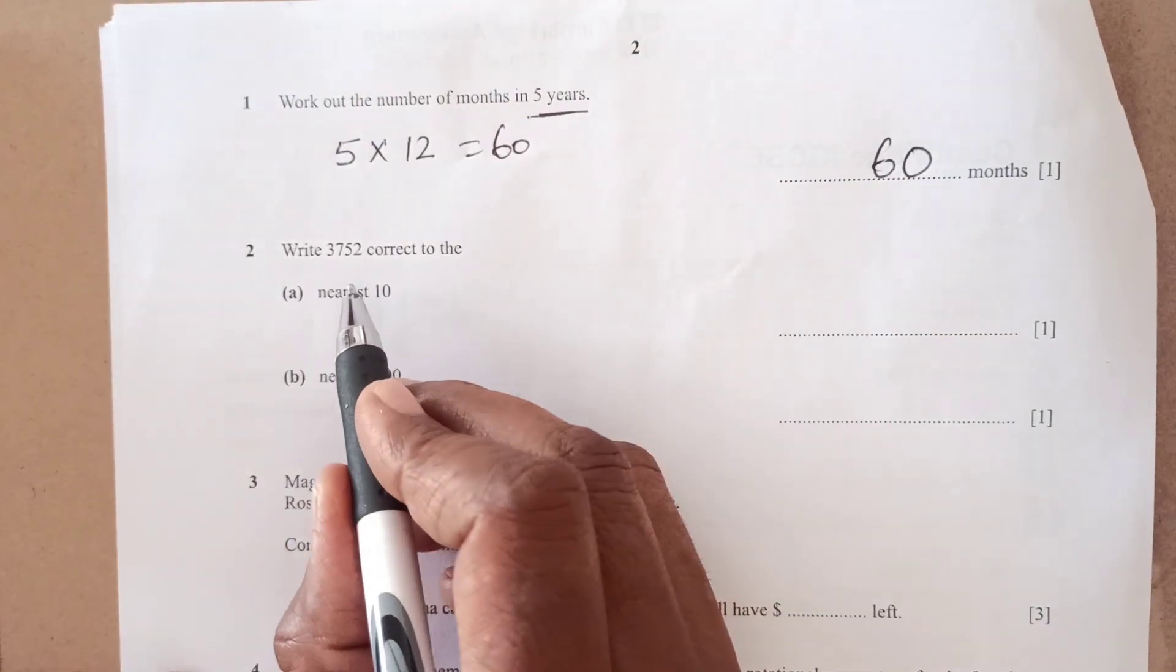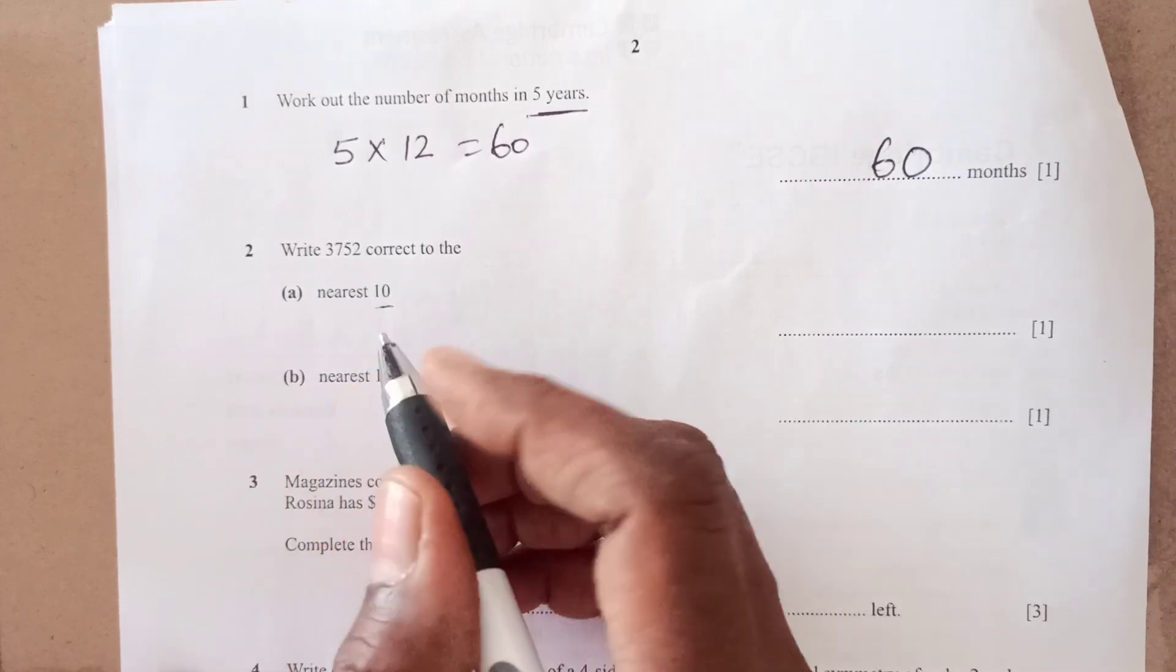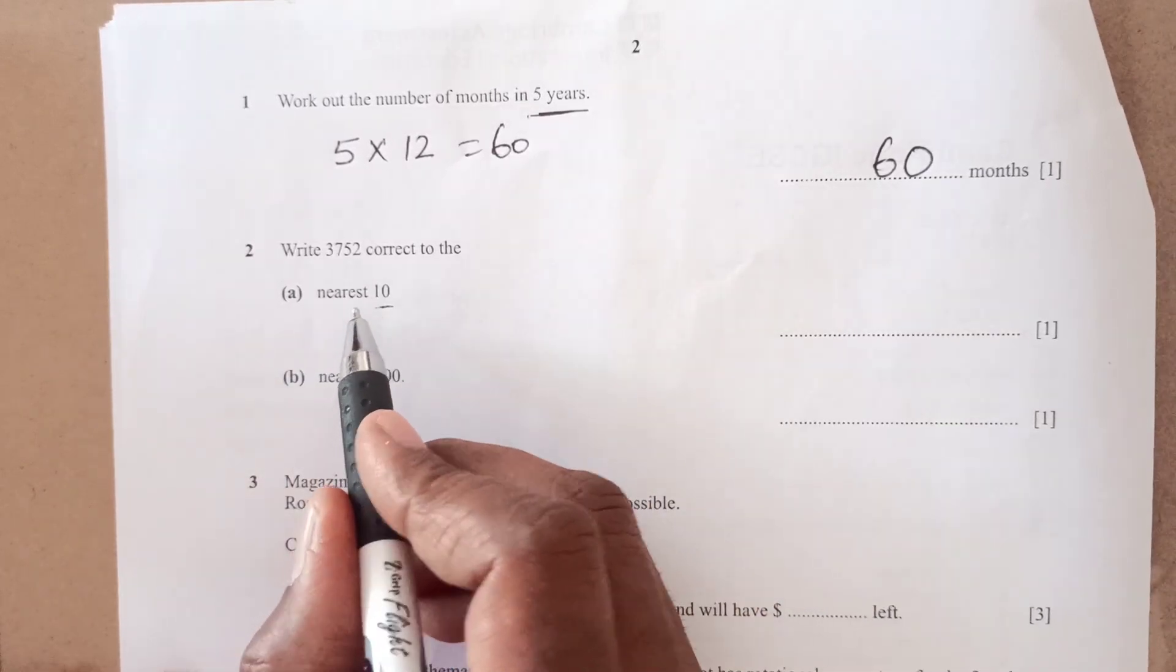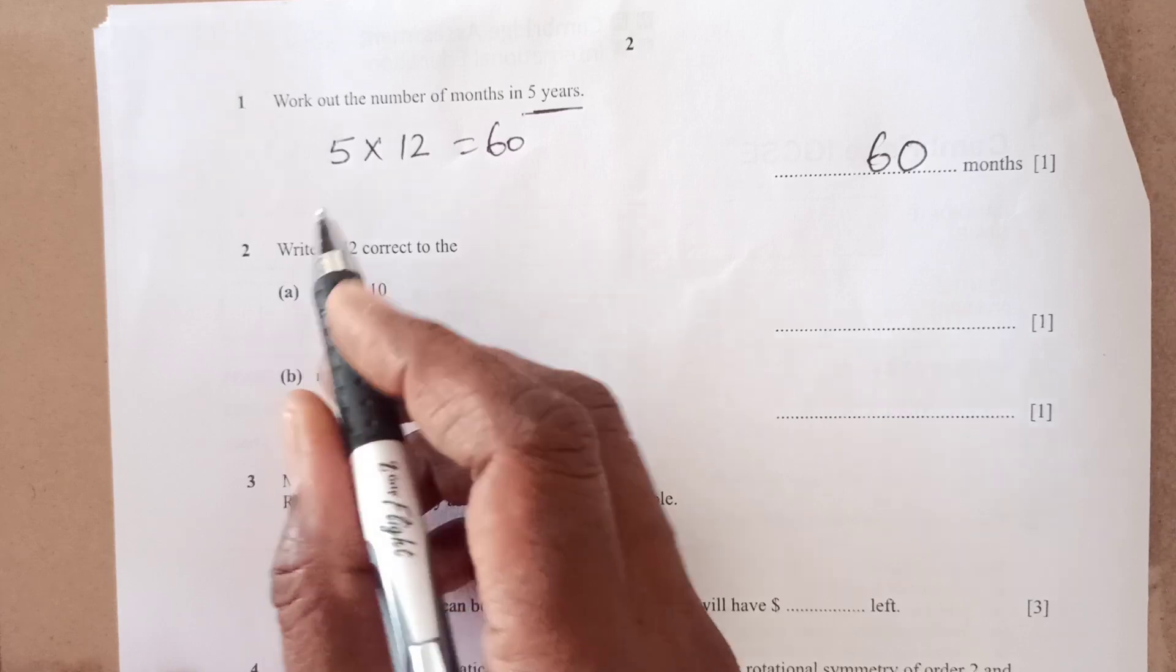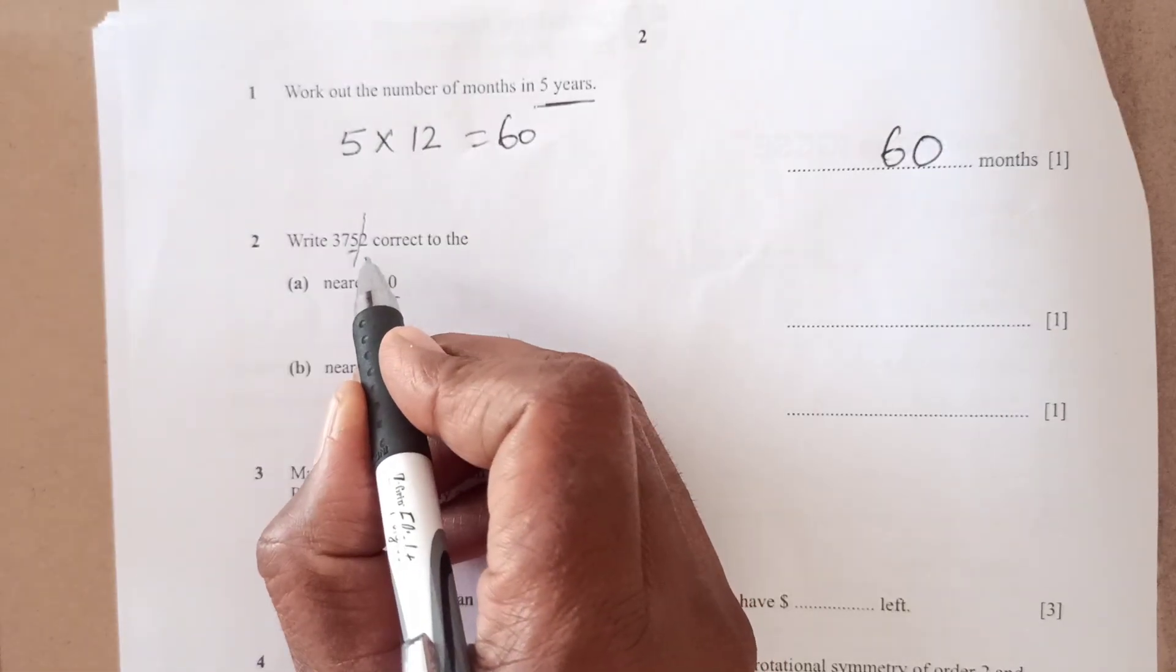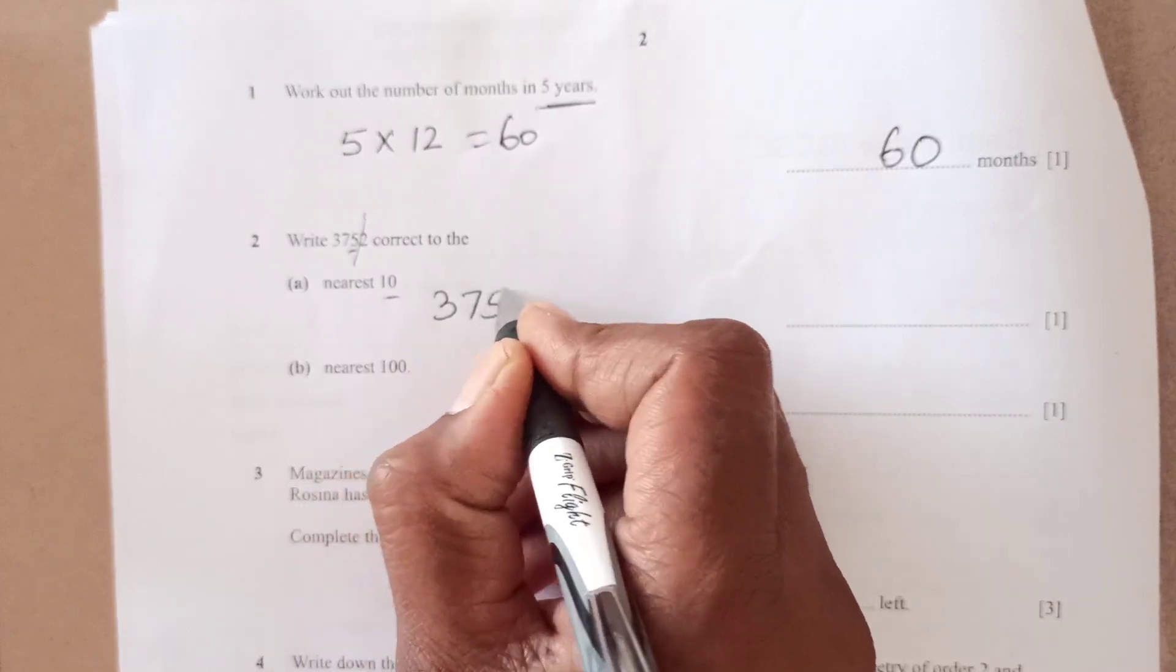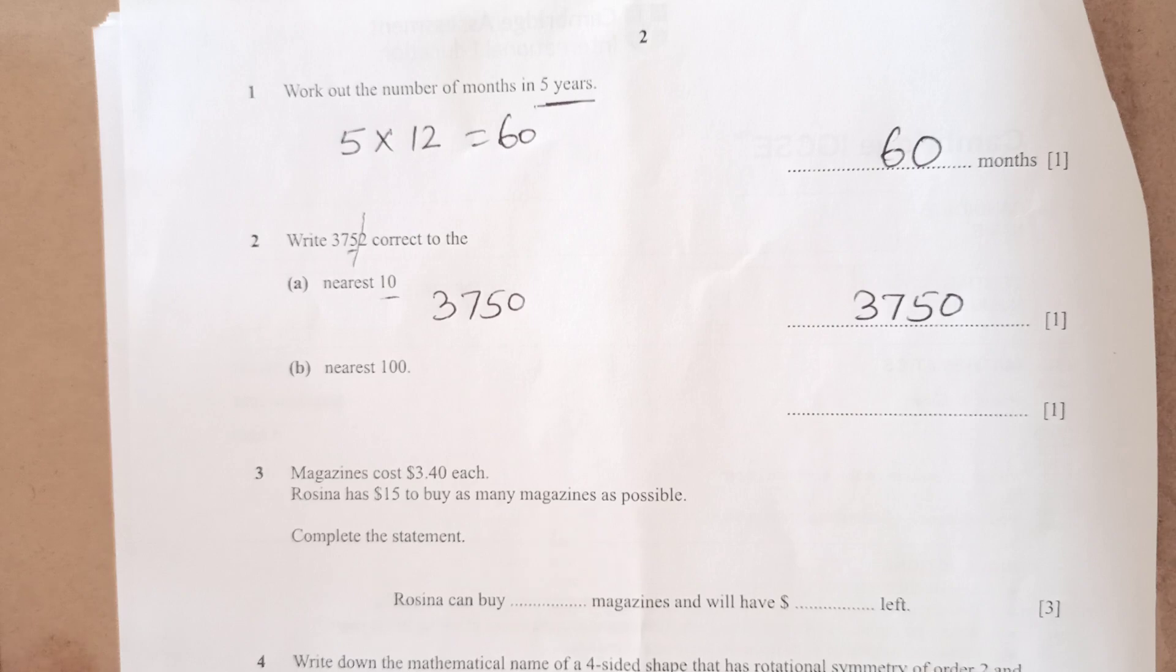Now, write down 3752 correct to nearest 10. Whenever you round the numbers, underline that place. It is nearest 10, 1 tenth. So this is 10. Then you see afterwards the next digit to that which is 2. Now, this is less than 5. So this is going to become 0. So this will be 3750.